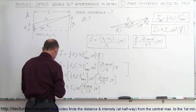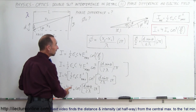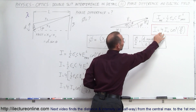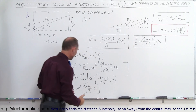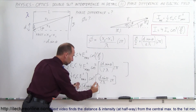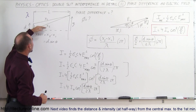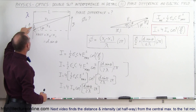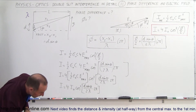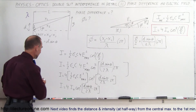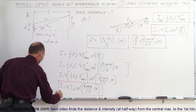That is the equation we had derived before: the intensity is 4 times the initial intensity times the cosine squared of φ/2, where φ/2 can be expressed in terms of θ — the angle that the two rays make relative to the horizontal from the double slit to a point on the screen. Let's box that in as an important equation.